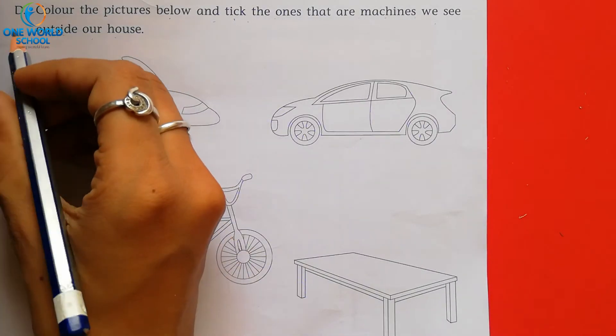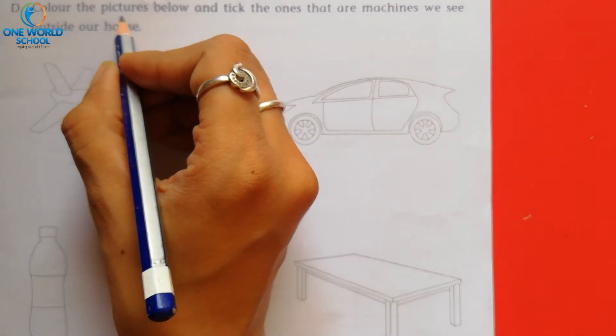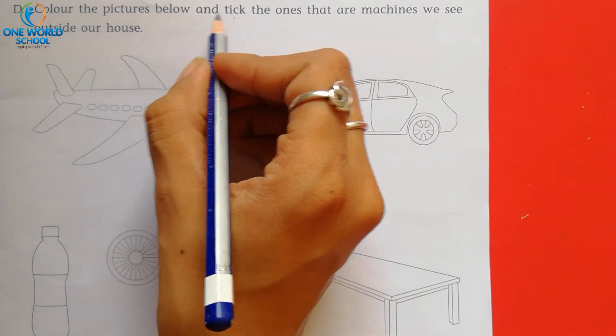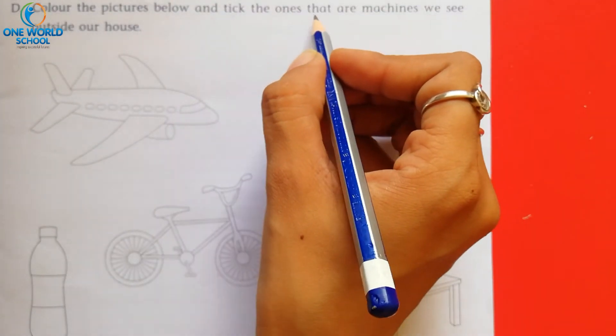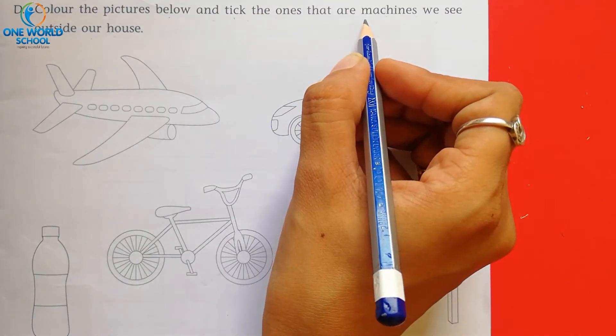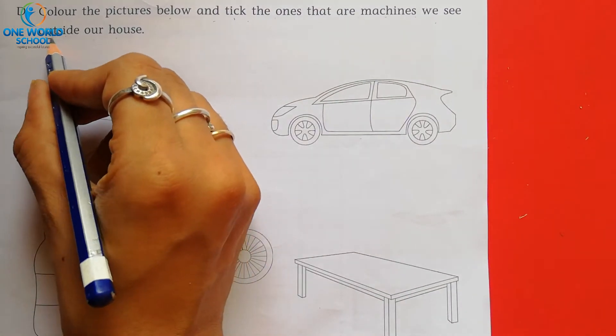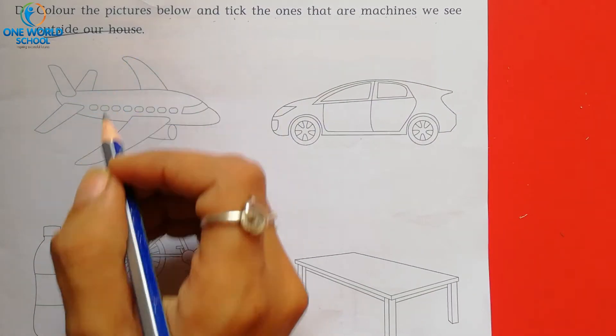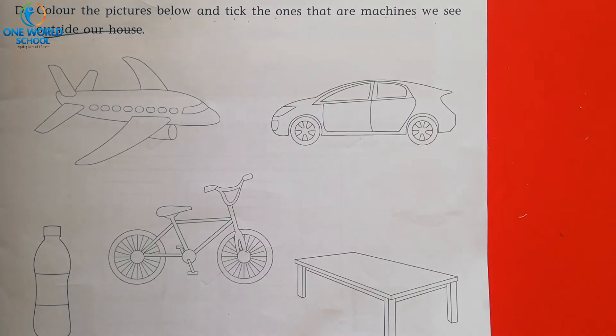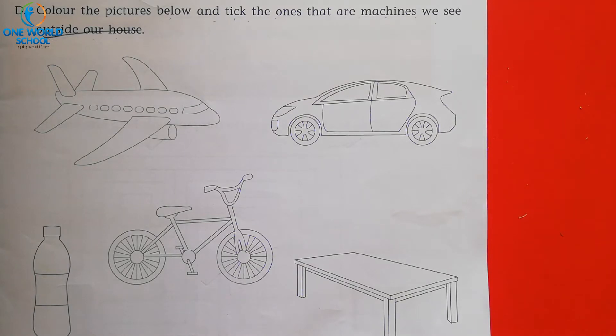Now next question. Question number D. Color the picture below and tick the ones that are machines we see outside our house. यानि कि जो machine हमें हमारे घर के बाहर यानि कि आउट साइड को देखने को मिलते हैं. वो picture को हमें टिक भी करने हैं. और उसको color भी करने हैं.